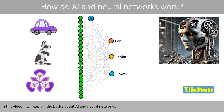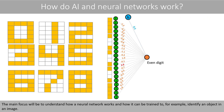In this video I will explain the basics about AI and neural networks. The main focus will be to understand how a neural network works and how it can be trained to, for example, identify an object in an image.